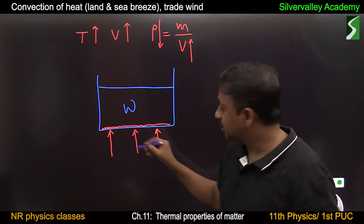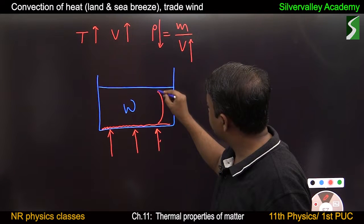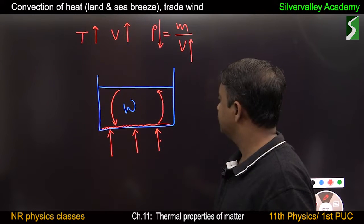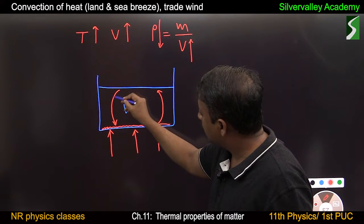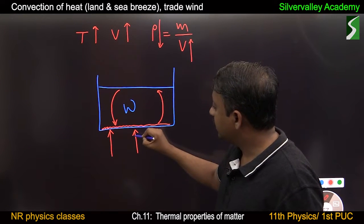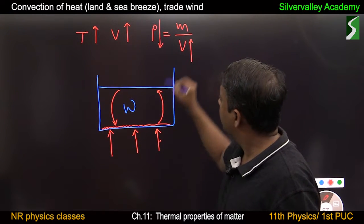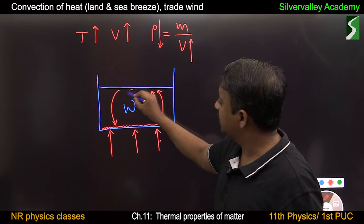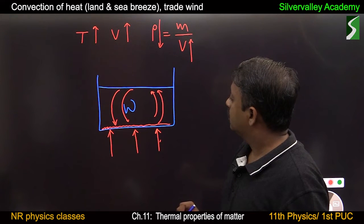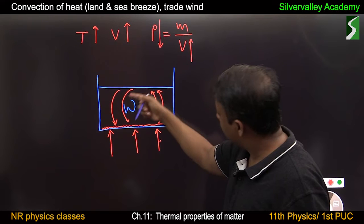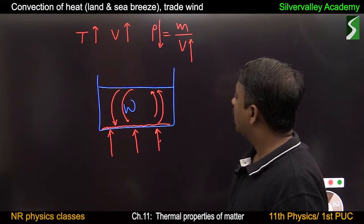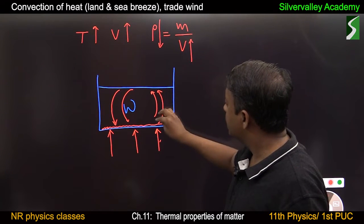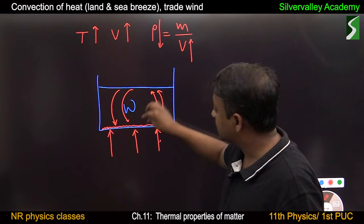This warm water, being less dense, goes to the top and relatively cooler water sinks. Now this cold water is in contact with the bottom. Again it absorbs heat energy, becomes warm, less dense, goes to the top, and relatively cooler liquid sinks. So there is transfer of heat throughout this liquid, and that is because of convection current. There is movement of water molecules inside this container.